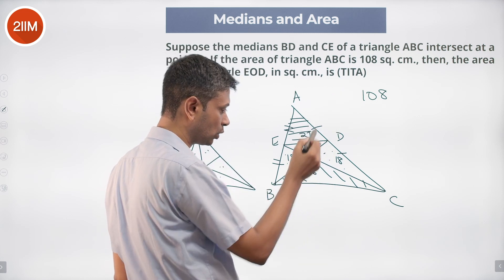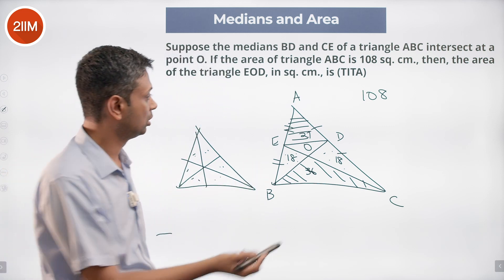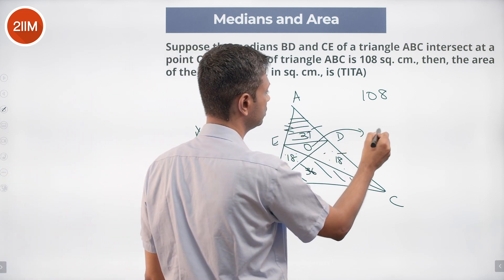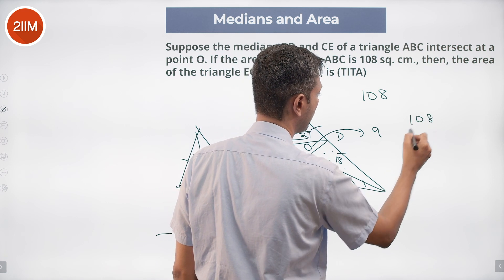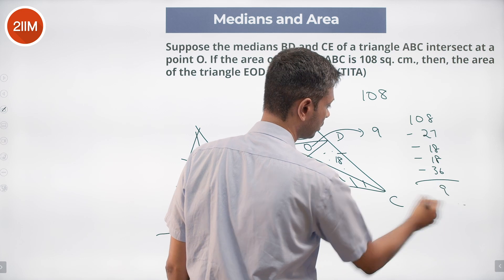Out of the 108, we have accounted for 36 plus 36, that's 72, with 36 remaining. 27 is accounted for here—9. 108 minus 27, minus 18, minus 18, minus 36: 9.